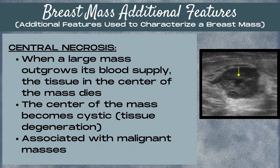Next, let's look at some additional features that we use to characterize benign versus malignant breast masses. Number one is central necrosis. This is when you have a large mass that's outgrown its blood supply and the tissue in the center of the mass dies or becomes necrotic. This tissue degeneration results in the center of the mass becoming cystic, and this is associated with malignant breast masses.